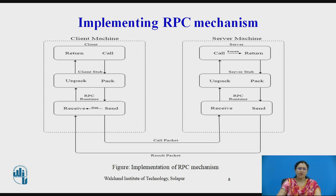The server stub also performs two tasks: it unpacks the call request message from the local RPC runtime and makes a perfectly normal call to invoke the appropriate procedure in the server. It also packs the result into a message and sends it to the client stub. The server receives the call request from the server stub, executes the appropriate procedure, and returns the result to the server stub. These are the implementation steps of the RPC mechanism.